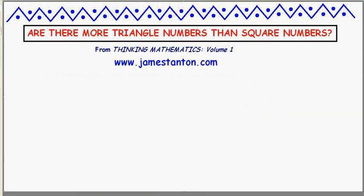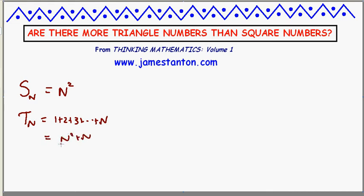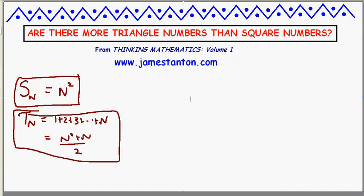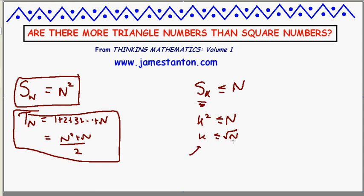So I need some formulas for these things. Here's the nth square number — clearly it comes from multiplying n by itself: it's n squared. The nth triangle number comes from a triangle of one dot plus two dots plus three dots all the way up to n dots, and the formula for the sum of numbers 1 up to n is n squared plus n divided by two. So, how many square numbers sk are less than or equal to n? How many k-squared values are less than or equal to n? That means k must be less than or equal to the square root of n. So the number of square numbers less than or equal to n is the square root of n rounded down to the nearest integer.